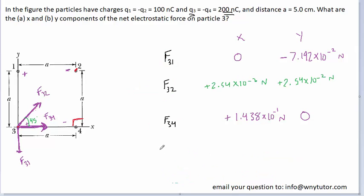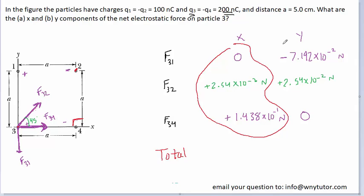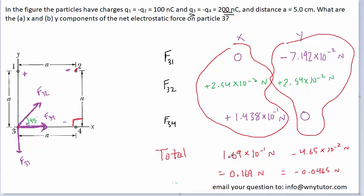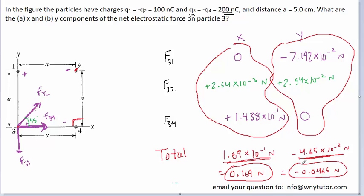Finally, to get the total x and y components, we add the x-direction components together and add all the y-direction components together. The final answers in scientific notation are shown on screen — here is the total x component and here is the total y component of the net force on particle 3. Converting to decimal form gives the final x component and the final y component of the force on particle 3.